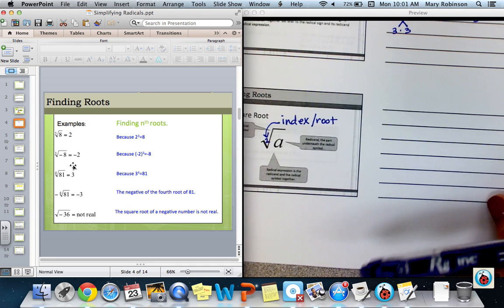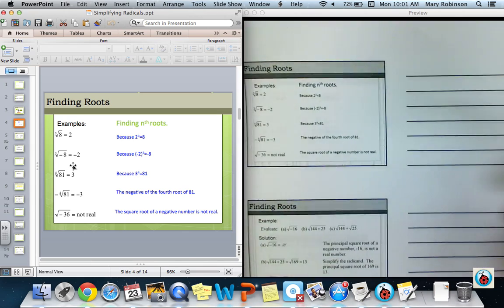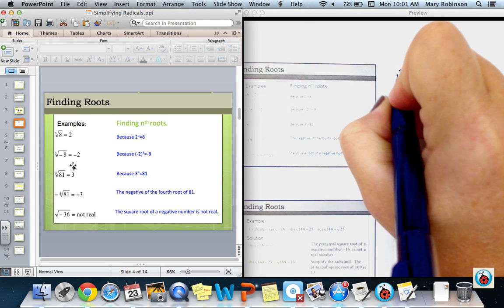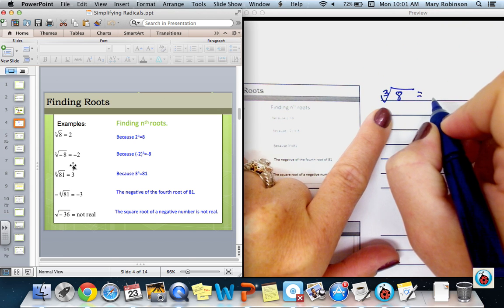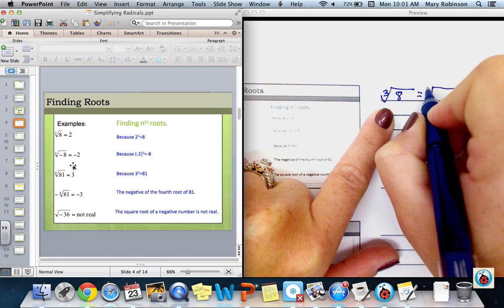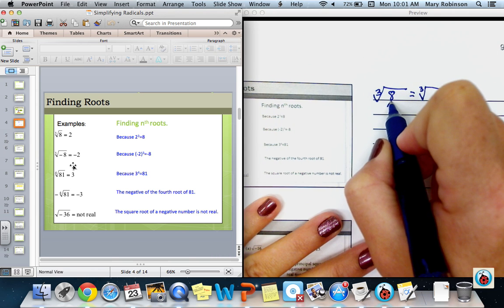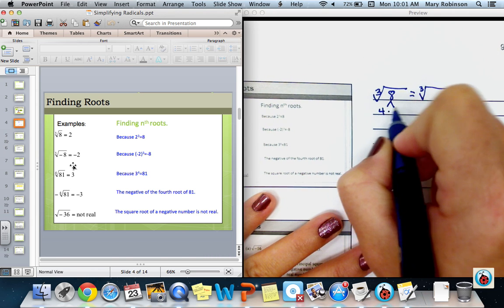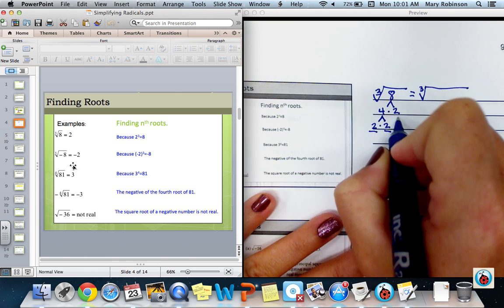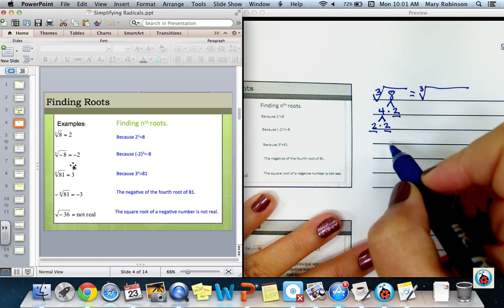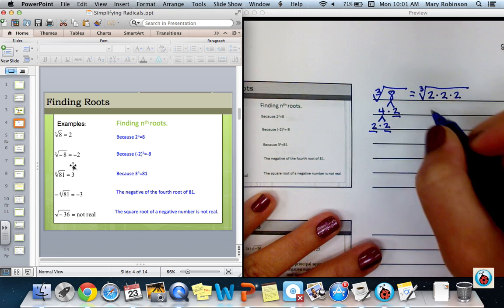Let's take a look at a few examples. If we first want to consider the cube root of 8, remember this time our index is 3, so we are actually looking for 3 of the same factor. Each time we rewrite the radical sign, we want to make sure that we carry over the index. If we break down 8, we know it is the product of 4 and 2, and that 4 can further be broken down into 2 times 2. When I do my factor tree, I always underline all my prime factors.